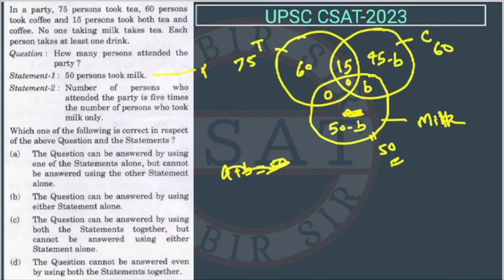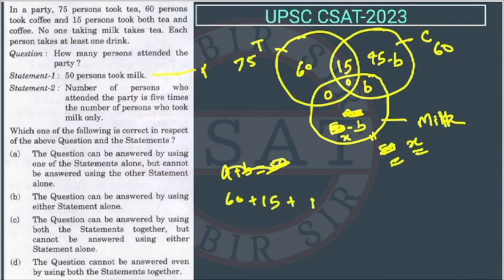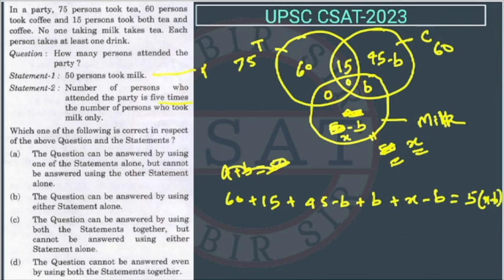Now Statement 2: the number of persons who attended the party is 5 times the number of persons who took milk only. Now consider milk total as X instead of 50, since we are evaluating Statement 2 alone. The milk-only region becomes X minus B. So the total persons who attended the party equals 60 plus 15 plus (45 minus B) plus B plus (X minus B).